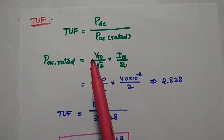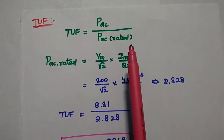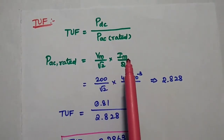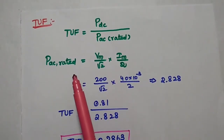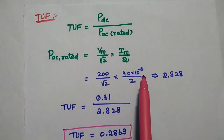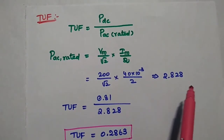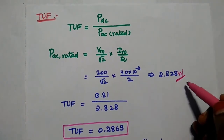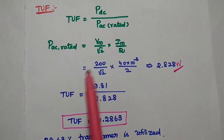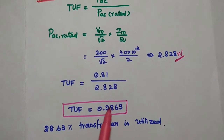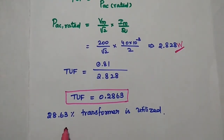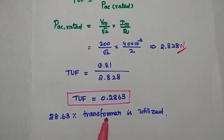The transformer utilization factor (TUF) is the ratio of DC output power to rated AC input power. The rated AC power = (Vm/√2) × (Im/2) = (200/√2) × (40 × 10⁻³/2) = 2.828 W. Therefore TUF = 0.81 / 2.828 = 0.2863, meaning 28.63% of the transformer is utilized.